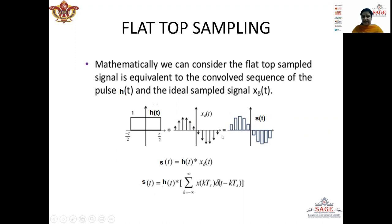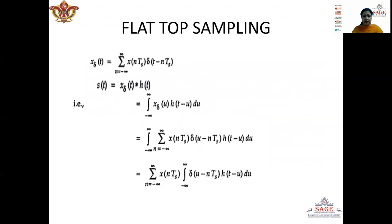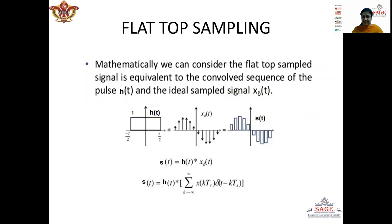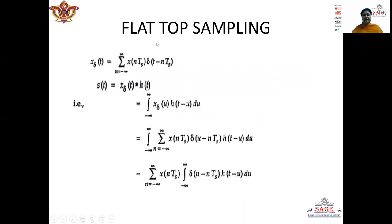Now, x_delta(t) is an instantaneous sample signal, so it is represented by the expression: summation from k equals minus infinity to infinity of x(kTs) delta(t minus kTs). And s(t) is given as the convolution of h(t) and x_delta(t). We can represent the integer k by k or m, so x_delta(t) is given as summation of x(nTs) delta(t minus nTs). Now, x_delta(t) convolved with h(t), according to the convolution formula, is given as the integral from minus infinity to infinity of x_delta(u) h(t minus u) du. We will take x_delta(u) from this equation by replacing small t with small u.